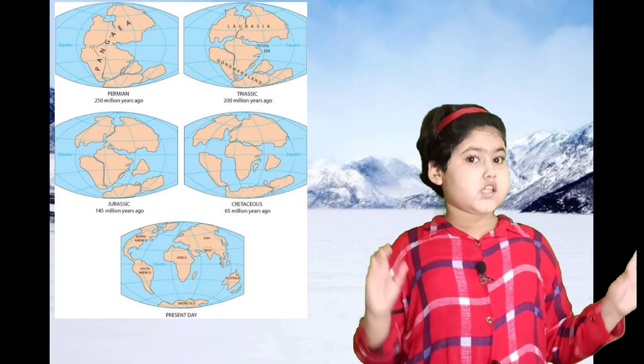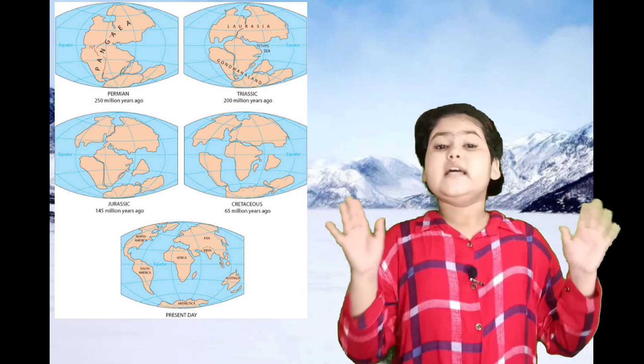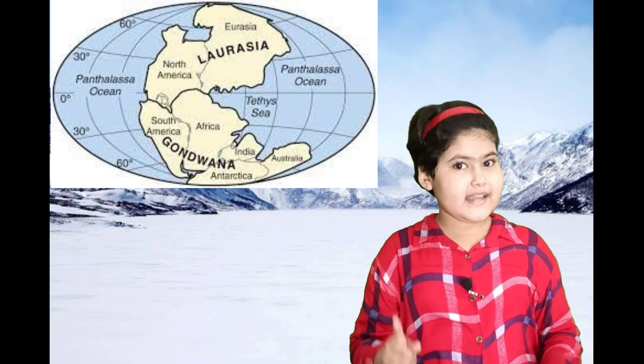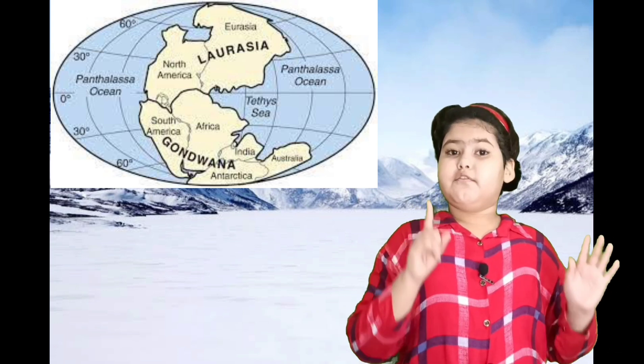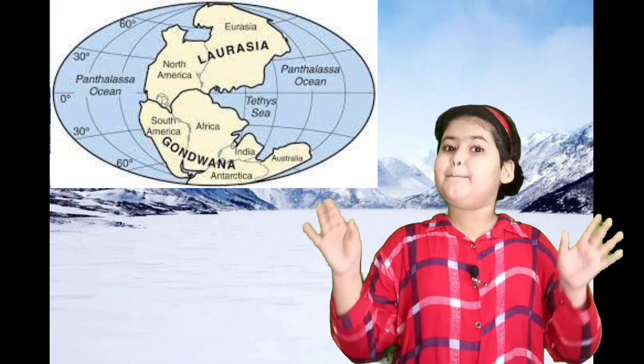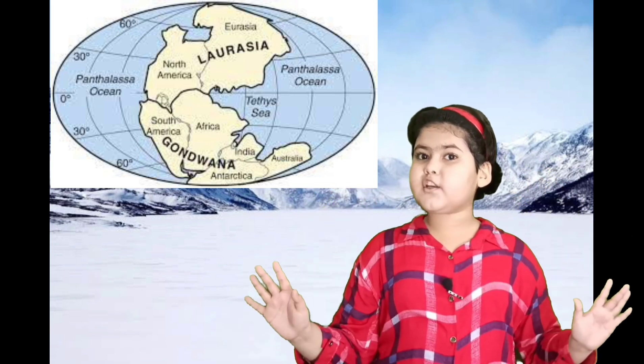According to Continental Drift Theory, around 250 million years ago there was only one continent, known as Pangaea, and only one ocean, known as Panthalassa. But in the present time there are seven continents and five oceans.